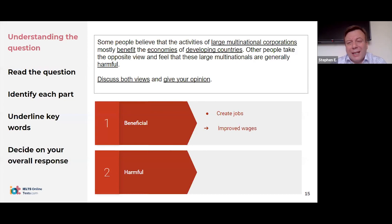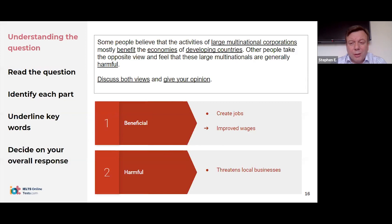What about the harmful aspects? Students suggested: pollution, damage to the local economy, disposing waste, disrespect for the environment, dumping, loss of local business, bad effect on small companies. So multinationals threaten local businesses and those local businesses close — those are some of the negative aspects.